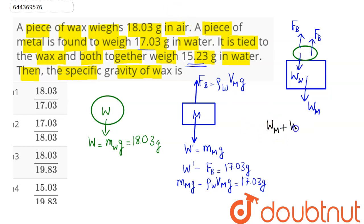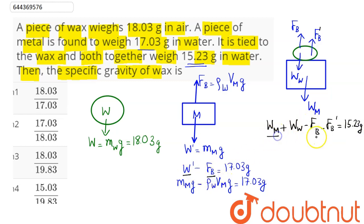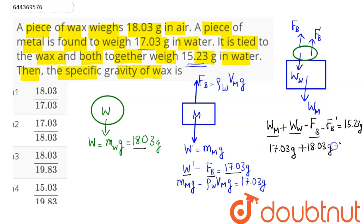This can be written as: weight of metal + weight of wax minus buoyant force on metal minus buoyant force on wax equals 15.23g. We know weight of metal minus buoyant force on metal equals 17.03g, and weight of wax equals 18.03g.